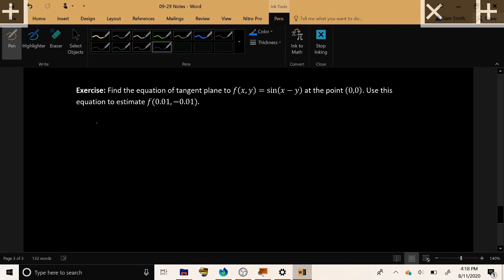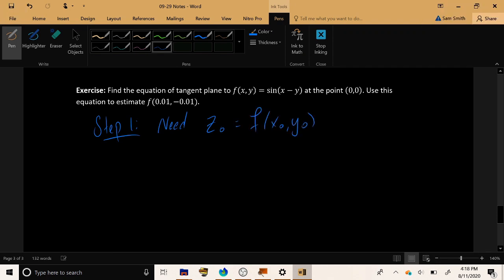Alright. So step one is we need to collect all the data that we need to fill in the blanks of the tangent plane equation, which means we're going to need z naught, which is equal to f of x naught, y naught, which is equal to f of the given point, 0, 0.